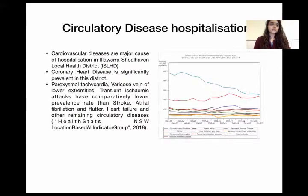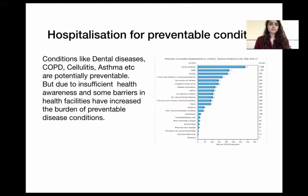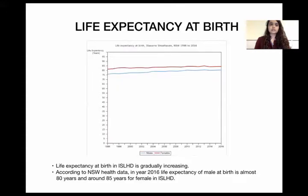Cardiovascular disease is considered a major cause of hospitalisation in this district, with coronary heart disease being the most significantly prevalent. Other conditions like paroxysmal tachycardia and varicose veins of the lower extremities have comparatively lower prevalence than stroke, atrial fibrillation and flutter, and heart failure. Preventable conditions include dental diseases, COPD, cellulitis, asthma, diabetic complications, angina, and iron deficiency anaemia, but health barriers and insufficient information have increased the burden of these preventable diseases.